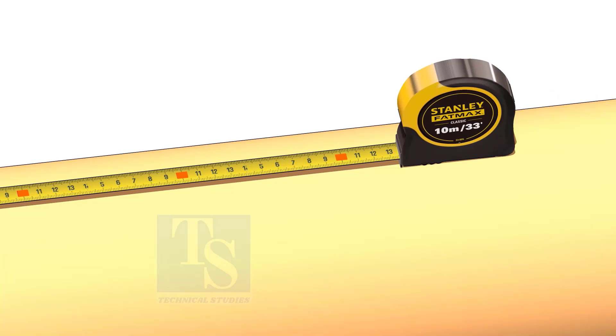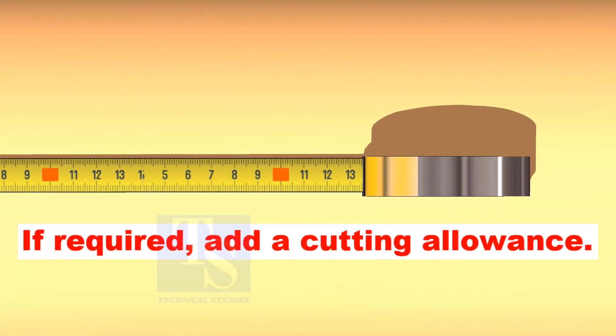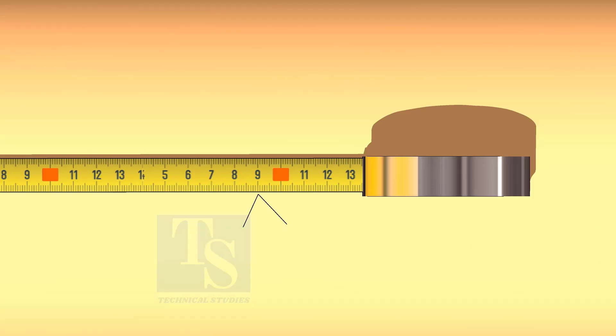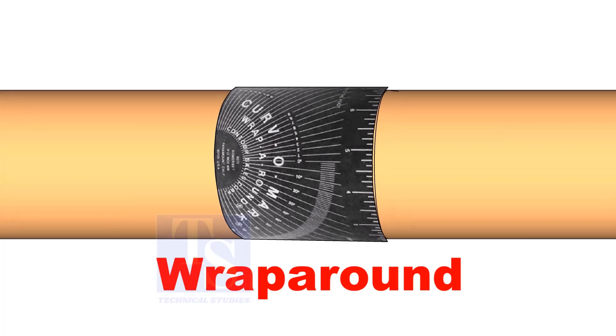Mark the required length of the pipe. If required, add cutting allowance. Use a wrap around to draw the circular line.